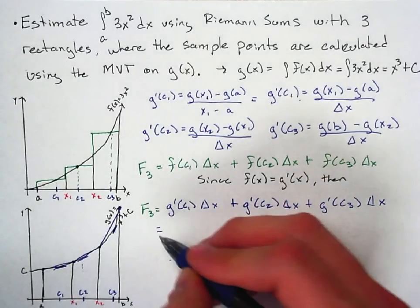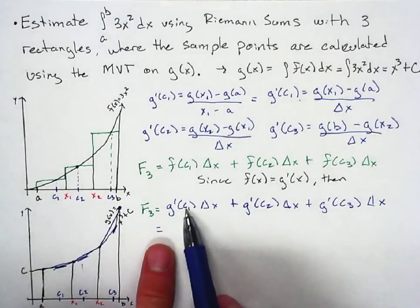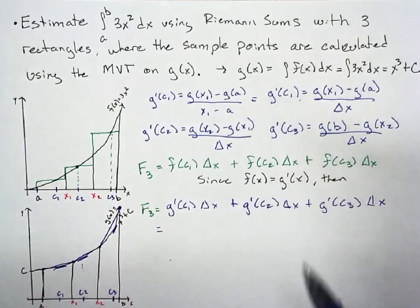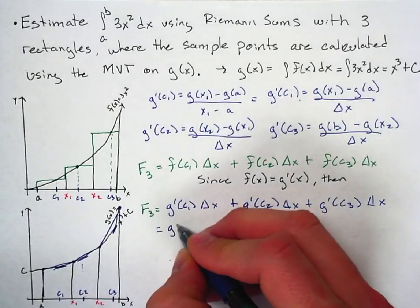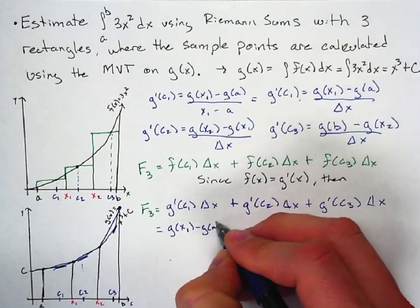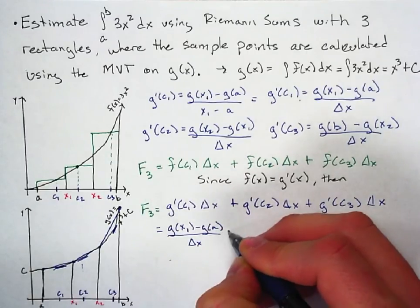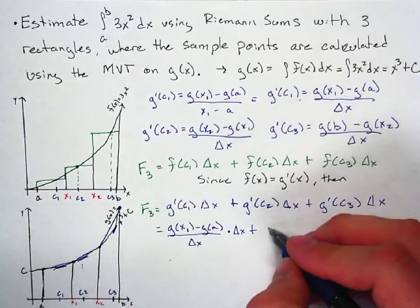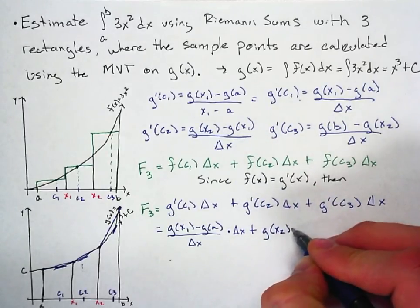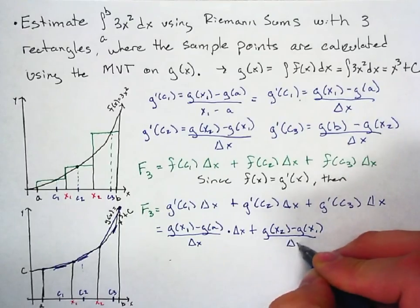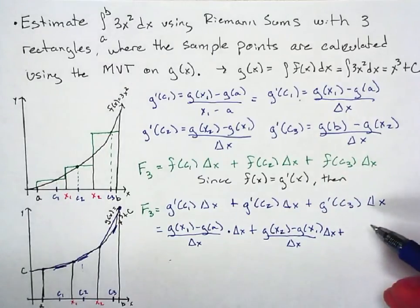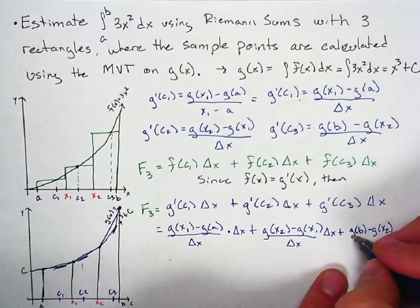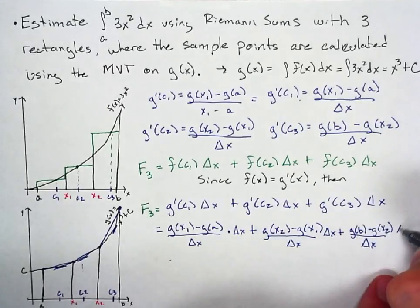Now we substitute the MVT equations we wrote earlier. g prime of c sub 1 is [g(x₁) − g(a)] / Δx, multiplied by Δx. g prime of c sub 2 is [g(x₂) − g(x₁)] / Δx, multiplied by Δx. And g prime of c sub 3 is [g(b) − g(x₂)] / Δx, multiplied by Δx.